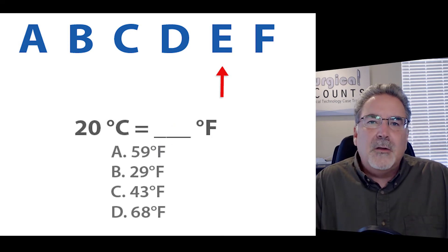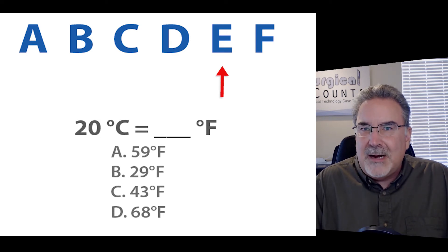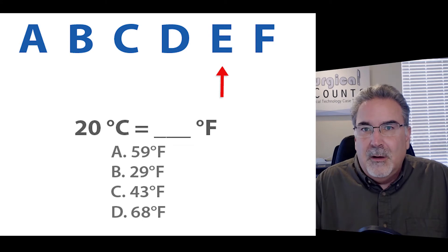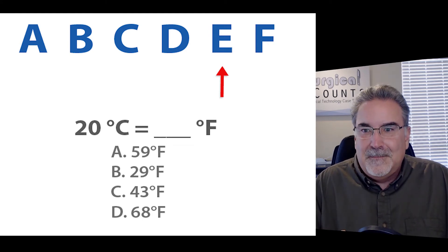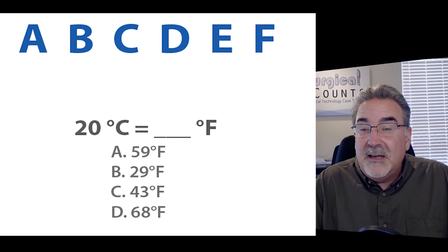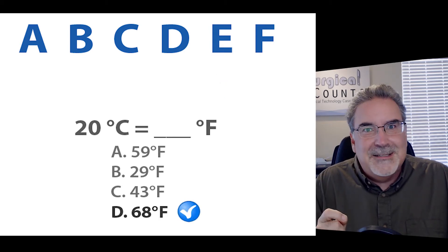Okay, so we know that there's a 30 involved. But do we add it, or do we subtract it? Well, again, we're going from C to F. We're going up the sequence. So we're going to increase the number, which means we're going to add that 30. 40, 50, 60, 70. And 70 is really close to 68.